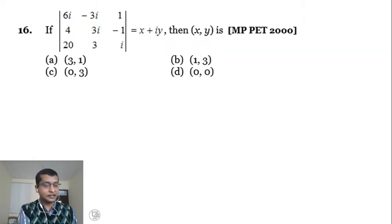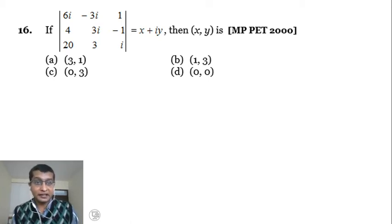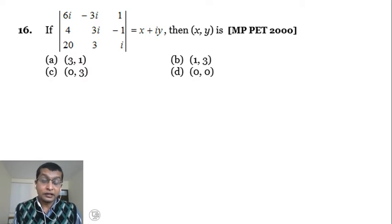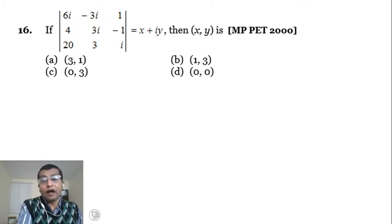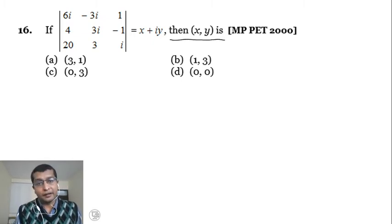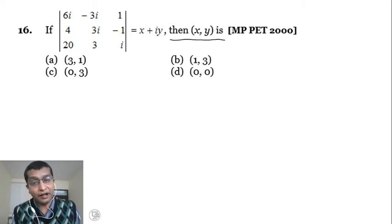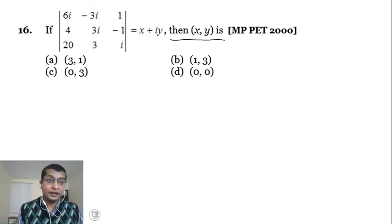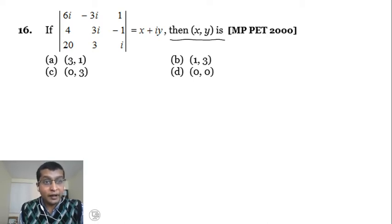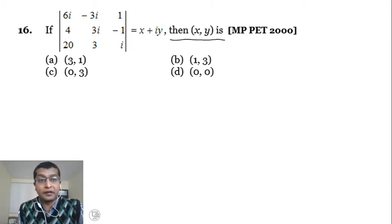We go to example 16. If a third-order determinant equals x plus iy, calculate the values of x and y. Here x is the real part and y is the imaginary part of the complex number. We need to expand the determinant, then equate real and imaginary parts to find x and y.